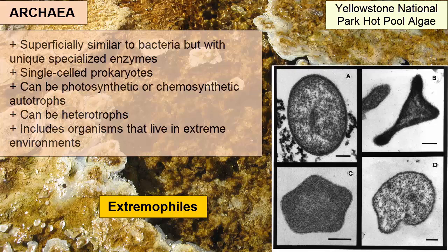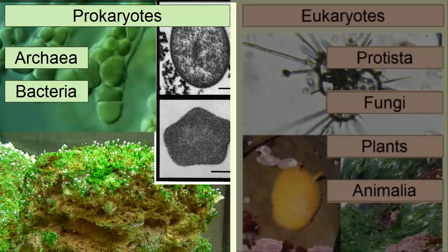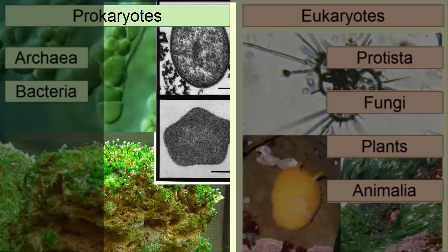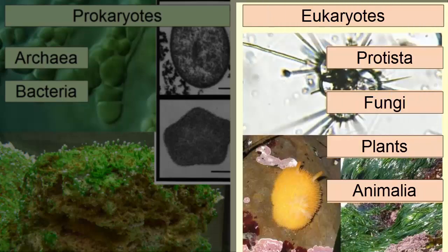Extremophile examples include high temperatures near hydrothermal vents or high acidity such as in sulfuric acid-rich caves in Mexico. Prokaryotic organisms were the first organisms to evolve on our planet, 3.8 billion years ago, and it is likely chemosynthetic Archaea were the very first. Bacteria and Archaea are collectively prokaryotes, distinguished from eukaryotes — which evolved after them — by their lack of a nucleus and other advanced cell components.